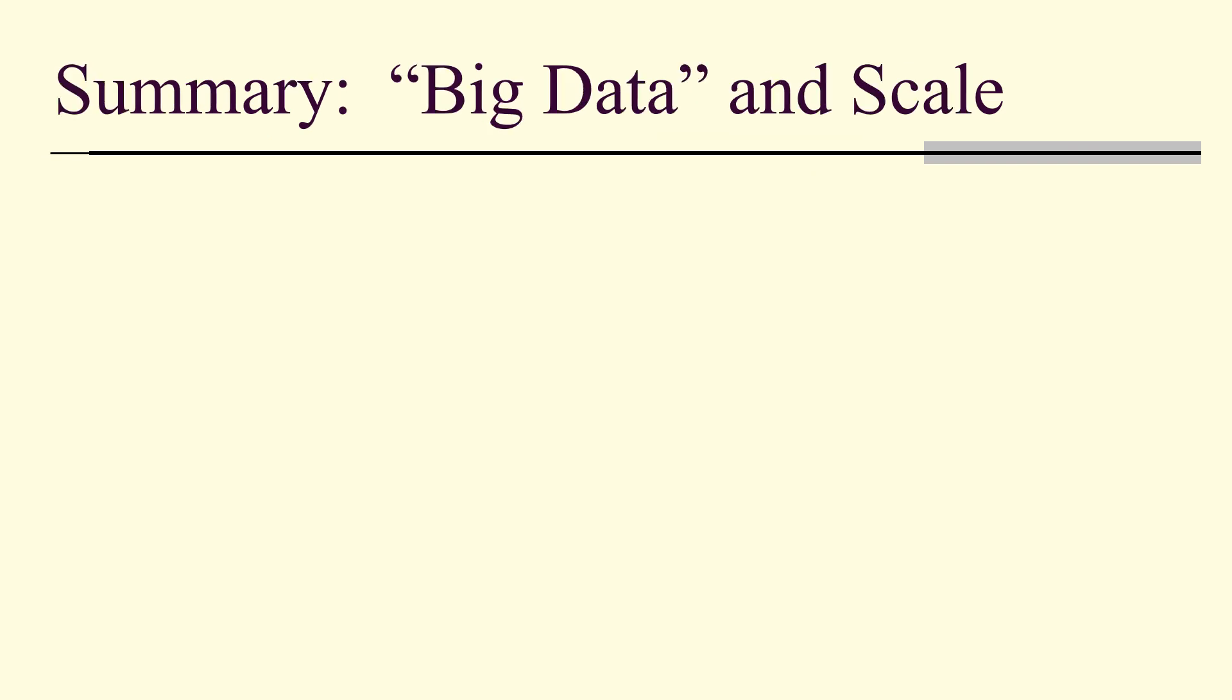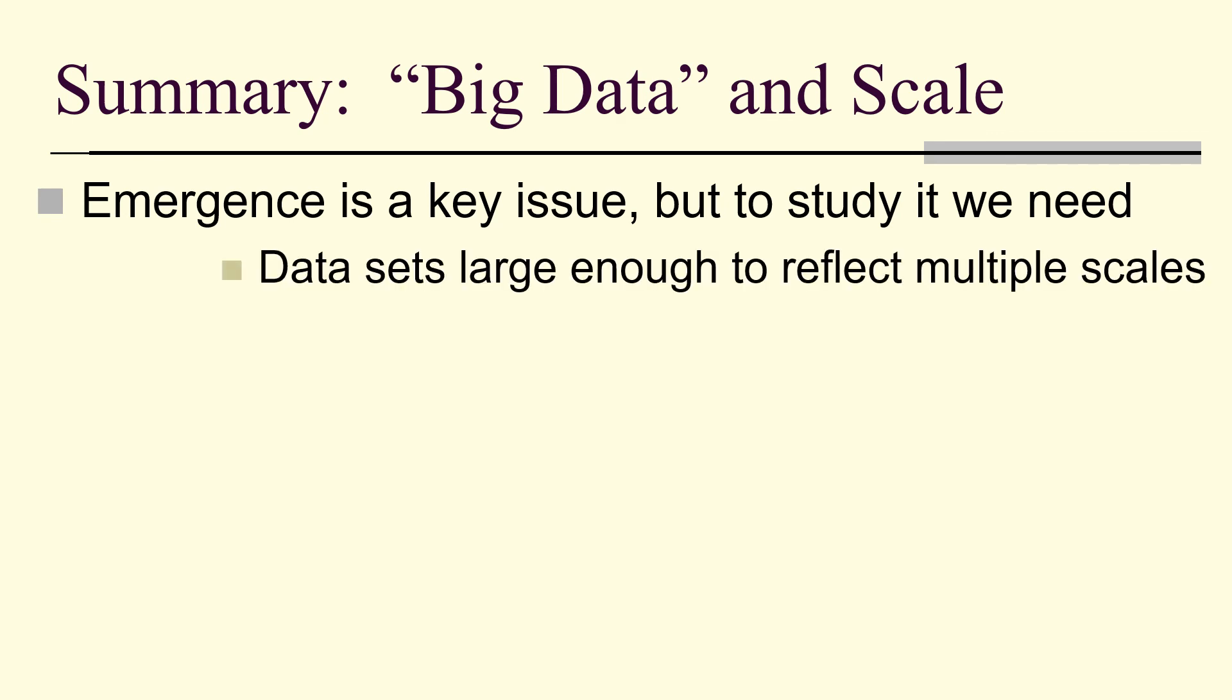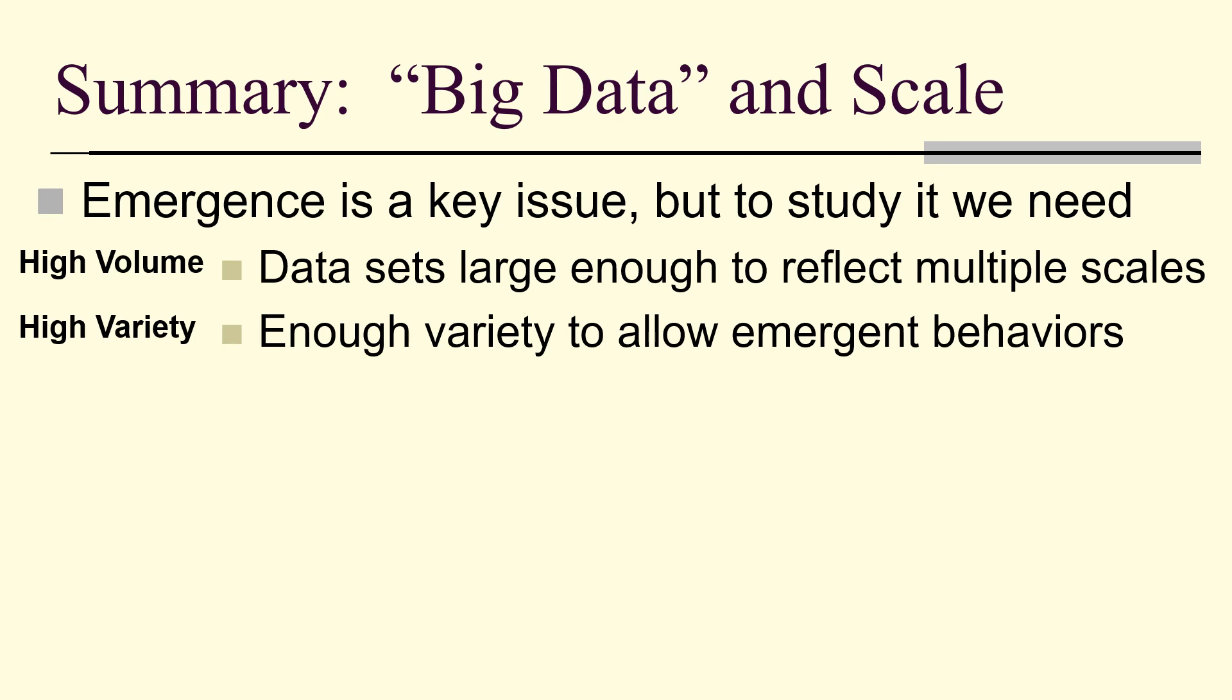So, big data and scale. Emergence is a key issue, but to study it, we need data sets large enough to reflect multiple scales. That's high volume. Enough variety to allow emergent behaviors. That's high variety.